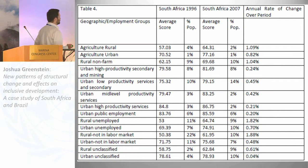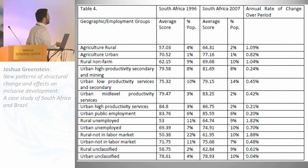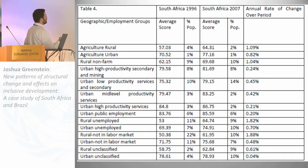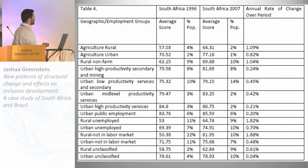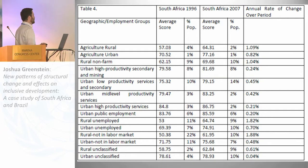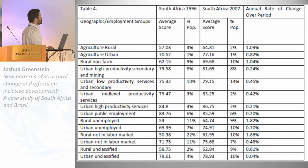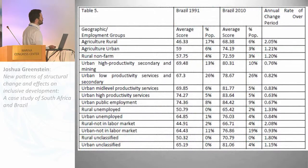Looking at all these groups in table form gives an idea of the differences. In South Africa, agricultural rural scores were 57 in 1996, while mid-level productivity services were almost 80 — huge disparities. These gaps get a little closer in the second period, with bigger growth rates for the lower groups. Something similar is seen for Brazil.